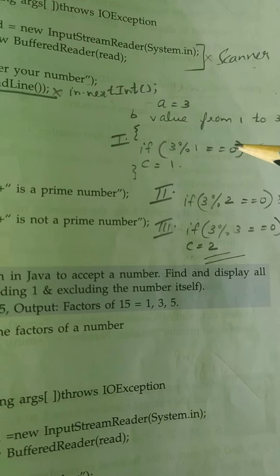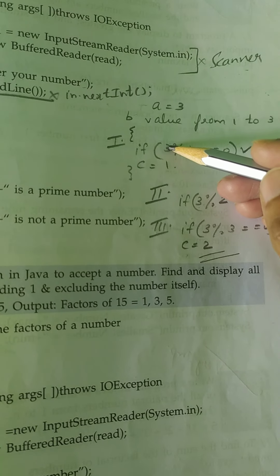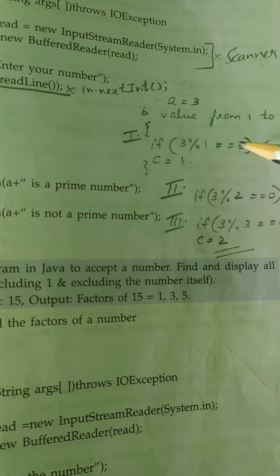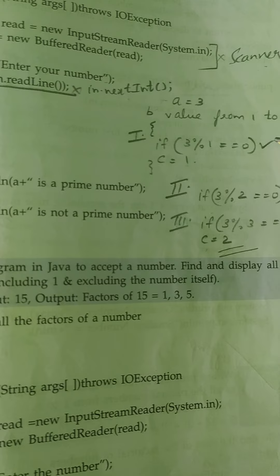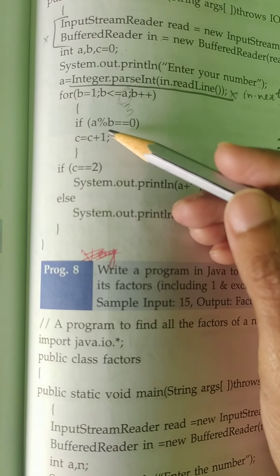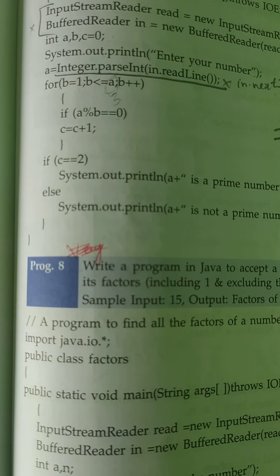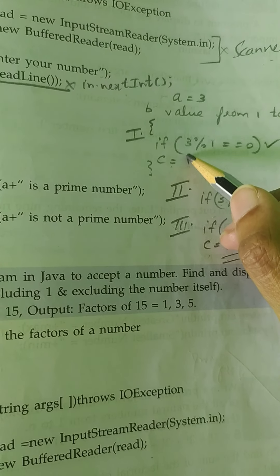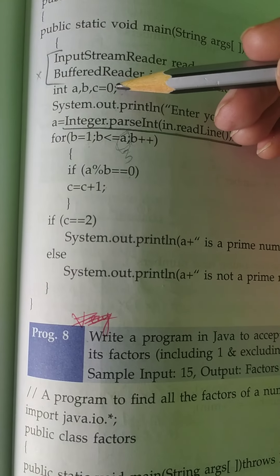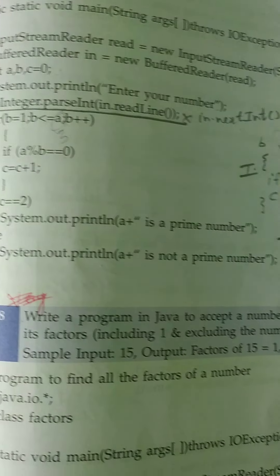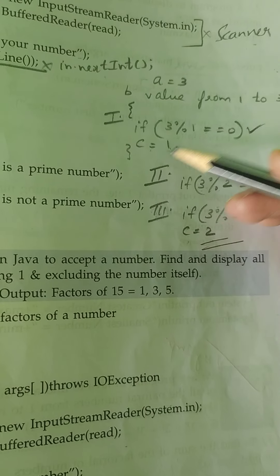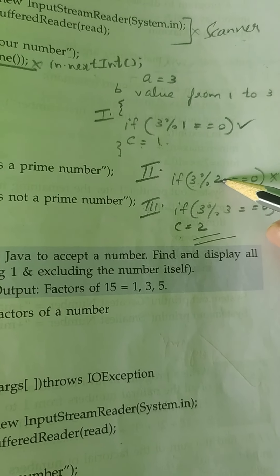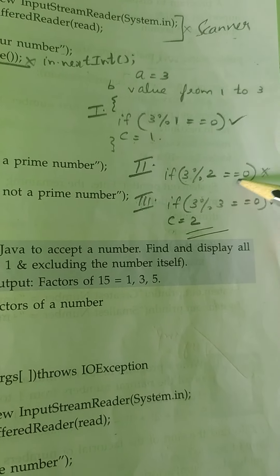Whether three is divisible by B value - B value is one first. So this condition is true. Then I need to increment the counter variable. Counter variable becomes one because it was already initialized as zero. Second loop, I'm incrementing the B variable to two.